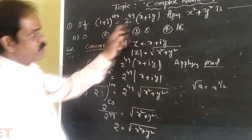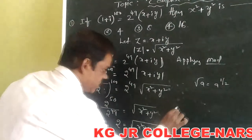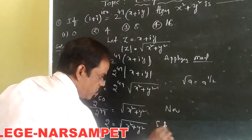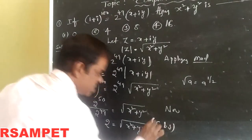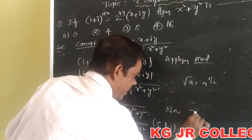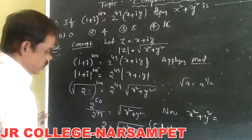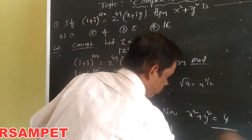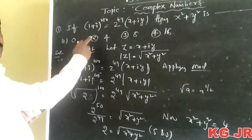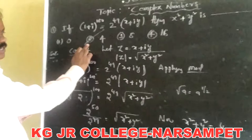According to the problem, we are asked for x squared plus y squared. So, squaring both sides, we get x squared plus y squared equals 2 squared, which equals 4. Therefore, the second option is the correct answer.